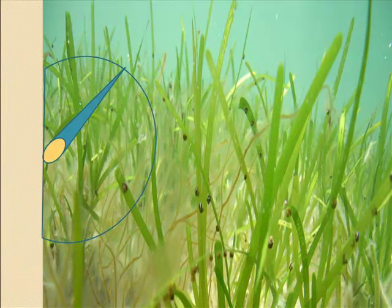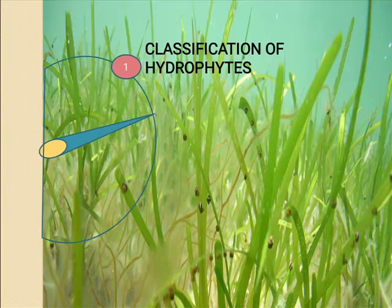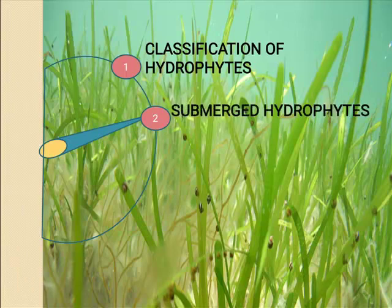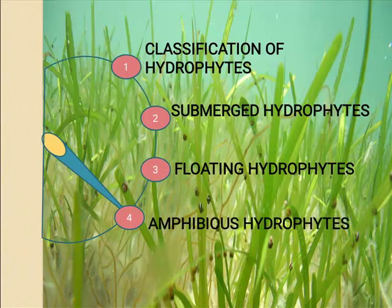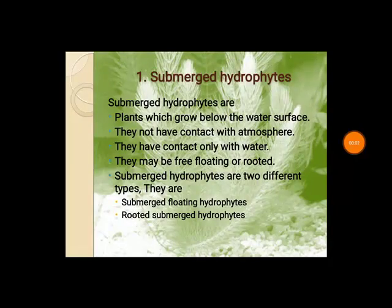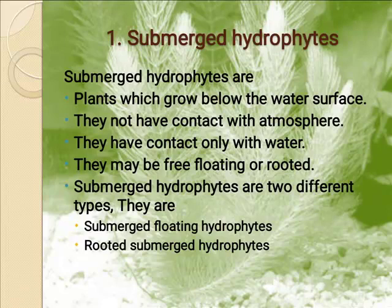Let's see the classification of hydrophytes. Based on the presence of plants in water conditions, hydrophytes are classified into submerged hydrophytes, floating hydrophytes, and rooted submerged hydrophytes. Submerged hydrophytes are further classified into two categories: submerged floating hydrophytes and rooted submerged hydrophytes.